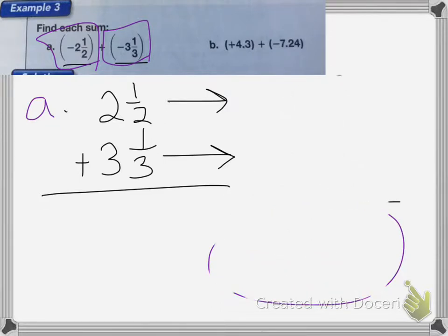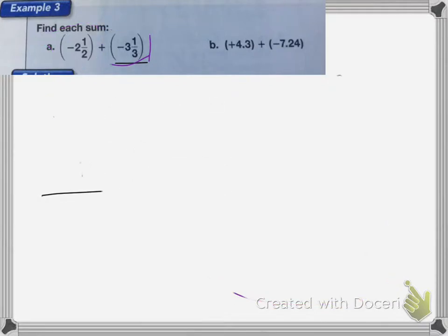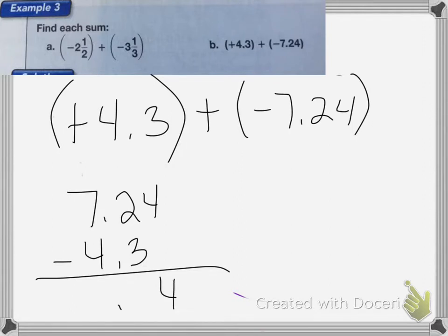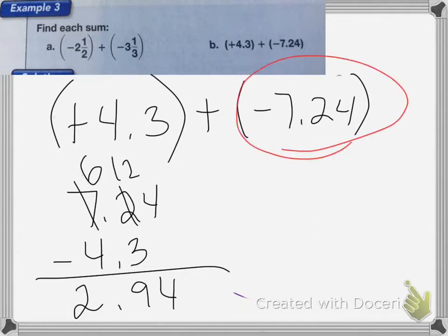With the next problem, I have positive 4.3 plus negative 7.24. Since the signs are different, we're going to find the difference of these two numbers and keep the sign negative, since negative 7.24 is bigger than positive 4.3. So I'm going to subtract them, 7.24 minus 4.3. The 4 stays, decimal comes straight down, I'm going to borrow from the 7, 12 minus 3 is 9, 6 minus 4 is 2. And again, since negative 7.24 is bigger, my answer is going to be negative 2.94.